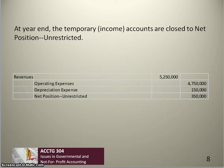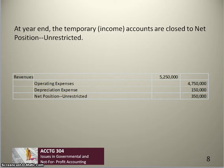Now that all events for the year are recorded, we begin closing. The first step is to close the temporary or income statement accounts to net position unrestricted — just as in the general fund we closed income accounts to unassigned fund balance, we always close to the least restricted component. Closing revenues, operating expenses, and depreciation expense results in an increase in unrestricted net position of $350,000.